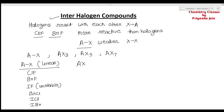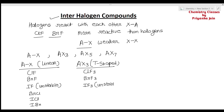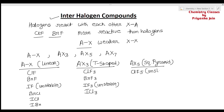AX3 type compounds are T-shaped. Examples are ClF3, BrF3, IF3 (which is unstable), and ICl3. AX5 type compounds are square pyramidal in shape. Examples include ClF5 (unstable), BrF5, and IF5.